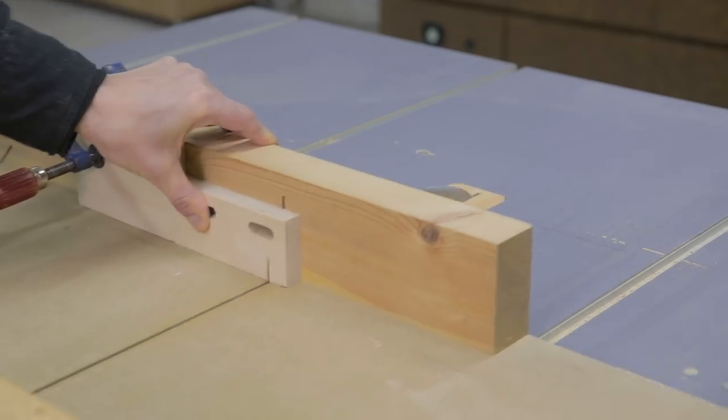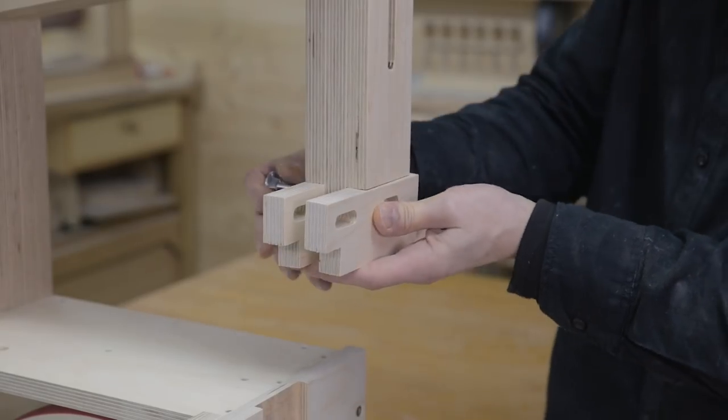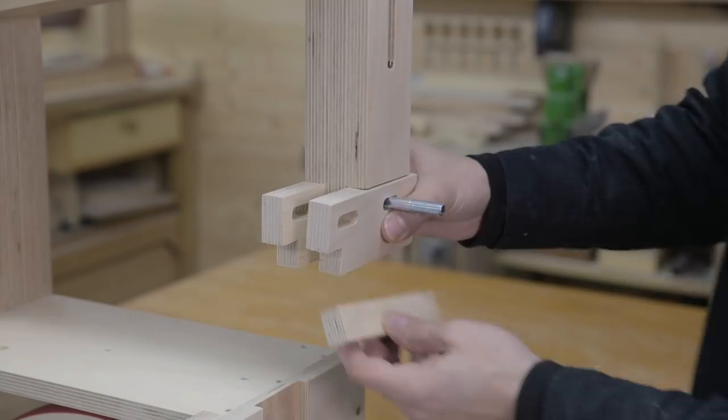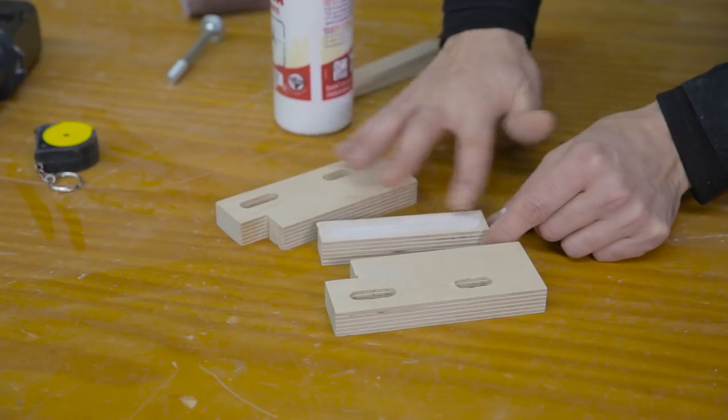I make this rebate with my table saw and make sure everything's all right. Now I can glue the three parts together.